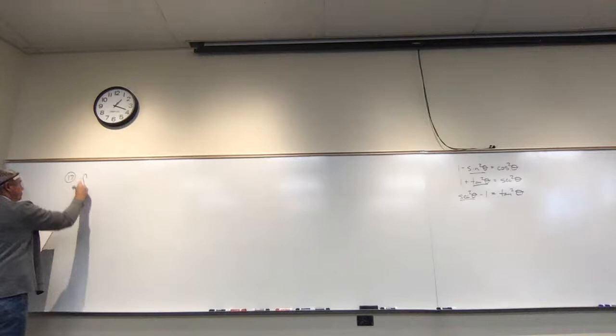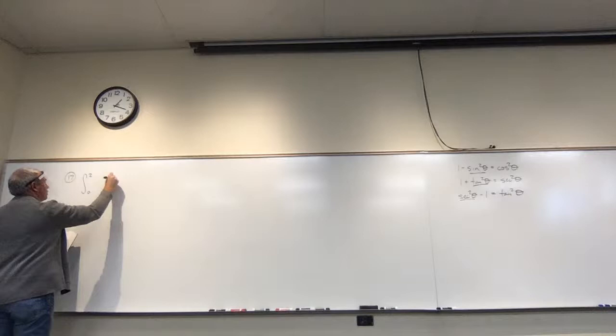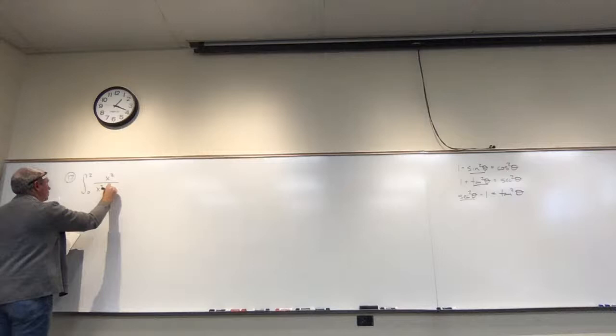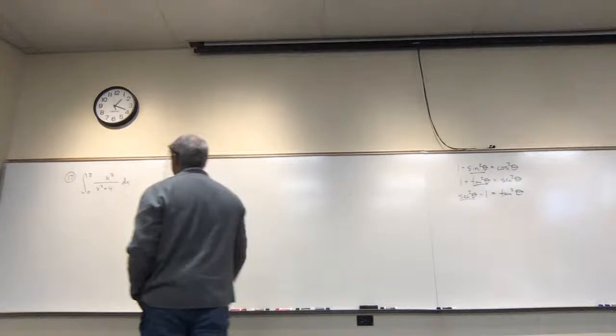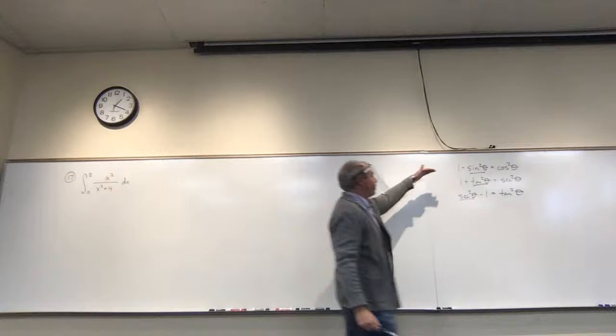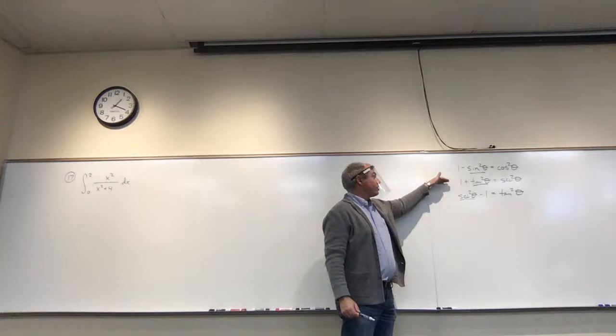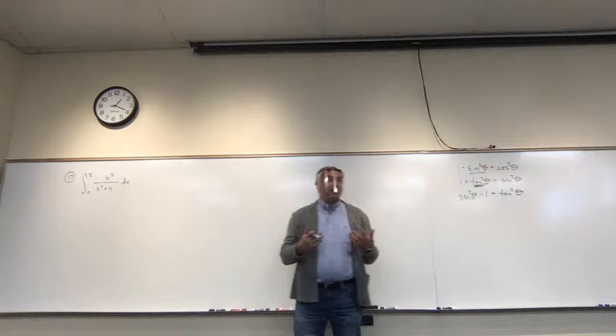Number 17: the integral from zero to two of x squared over x squared plus four, dx. First, what form are we in? This is the second form — something squared plus one — so we need to substitute using tangent theta.